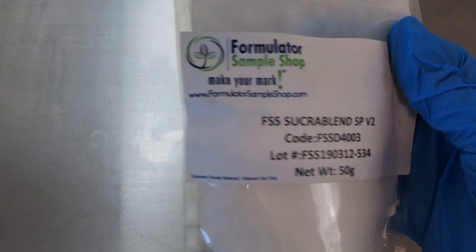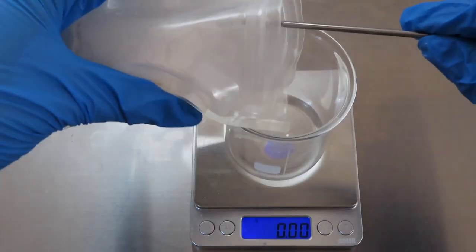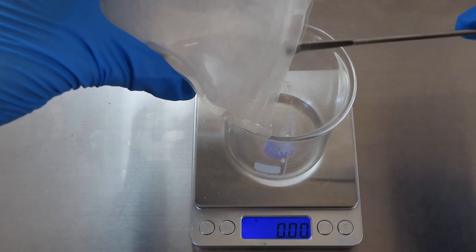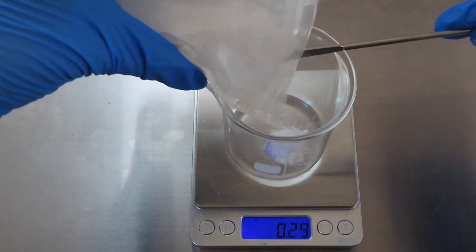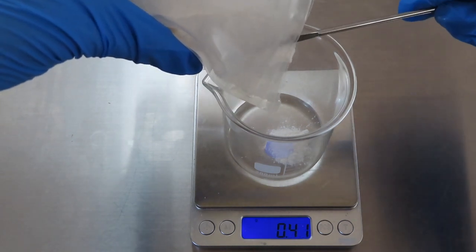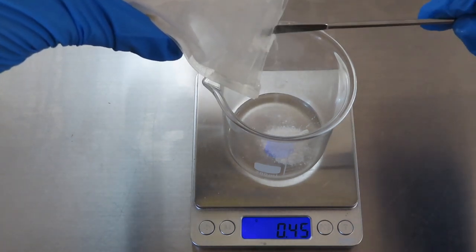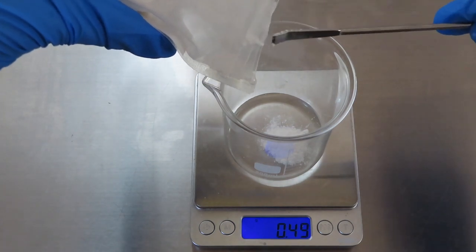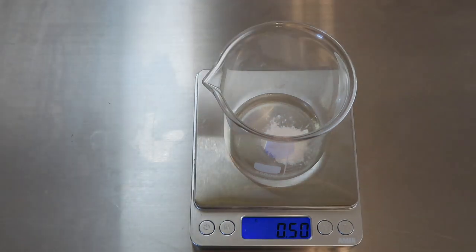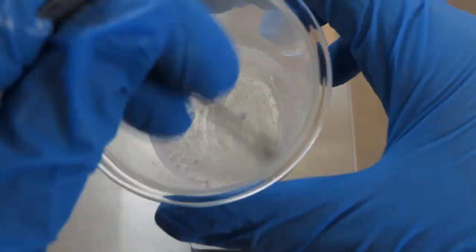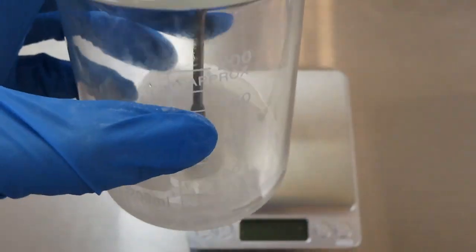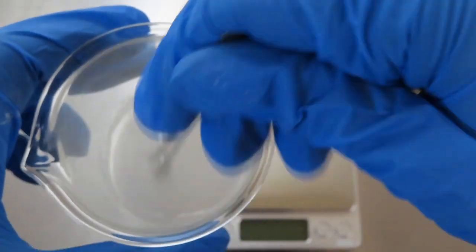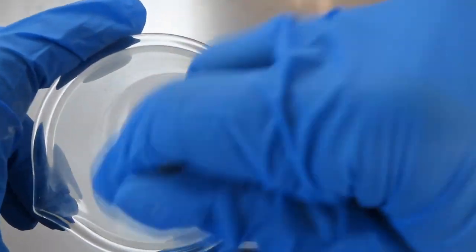Once I have that, I'm adding the sucra blend, also from Formulator Sample Shop. The manufacturer recommends using sucra blend, so I went with it. I can't tell you what it would be like without it since I've only used it with, but that is up to you. Add that to the amount you need, like always. Then you start blending. I start with just a metal rod to make sure I get all the bits and pieces mixed up.